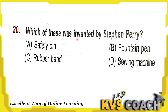Next question: which of these was invented by Stephen Perry? Option A is safety pin — invented by Walter Hunt. Option B is fountain pen — there are many inventors, but Lewis Waterman invented the modern fountain pen. Option C is rubber band — this was invented by Stephen Perry. Option D is a sieving machine — invented by Thomas Sand. So the right answer is rubber band.